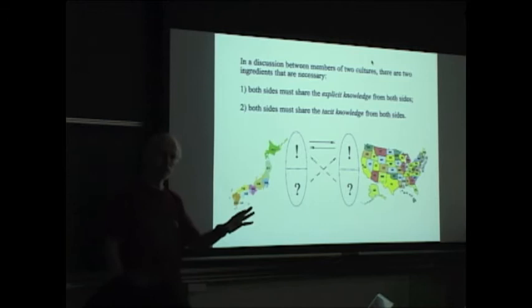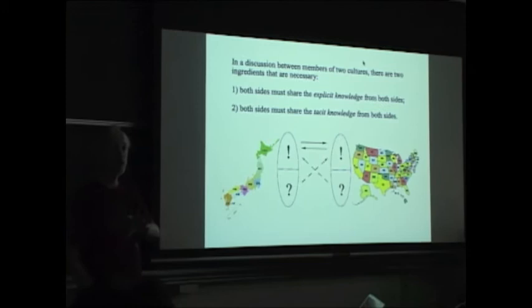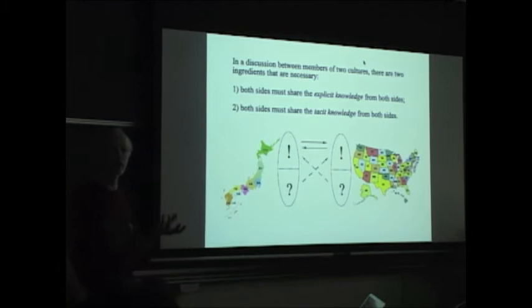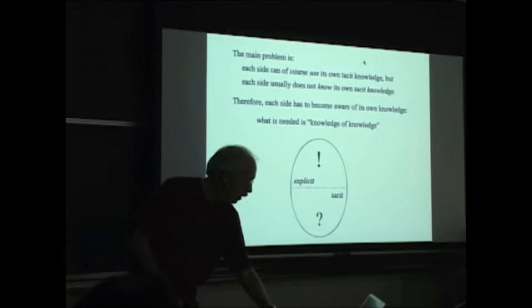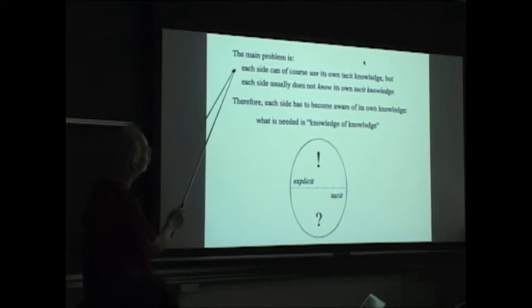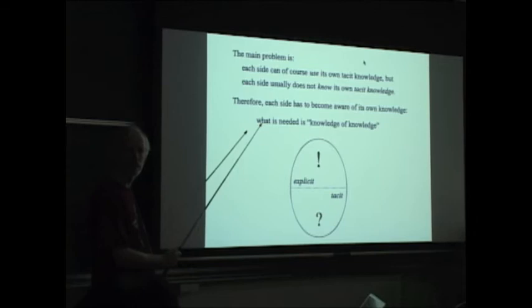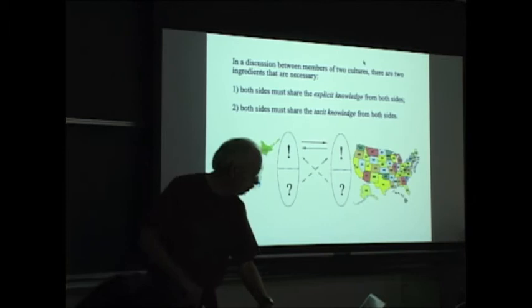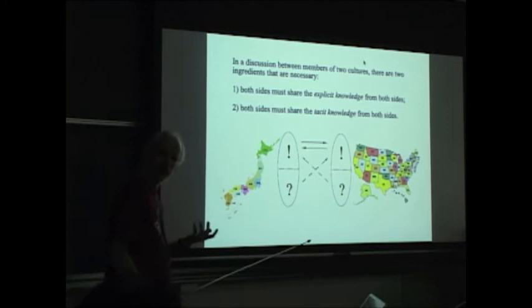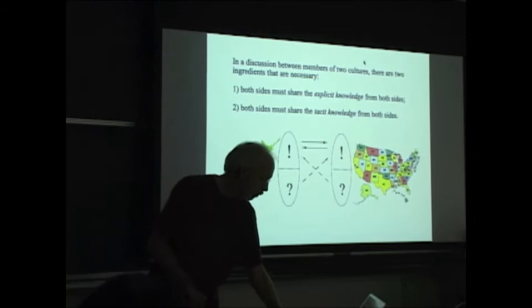This is also a question already. If a mathematician and a physicist work together, there is very different knowledge. The physicist has to learn more mathematics. The mathematician has to learn more physics. But that is the simple part. The difficult thing is to get a physics feeling and a mathematics feeling of how to look at the problem. So, each side can, of course, use its own tacit knowledge, but they don't usually know, they usually don't know their own tacit knowledge. Therefore, each side has to become aware of its own knowledge first. What is needed is a kind of knowledge of your own knowledge. So, if you go to the previous picture, then before you can tell the other person what you really mean, you first have to tell yourself, and then you can communicate with others.